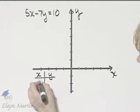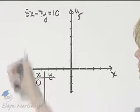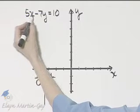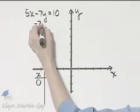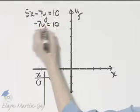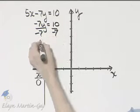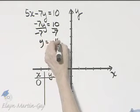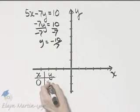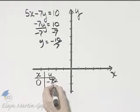We can find the y-intercept by letting x be zero. If we let x be zero, that term is gone, and I have negative 7y is 10. Divide both sides by negative 7, and y is negative 10 over 7.